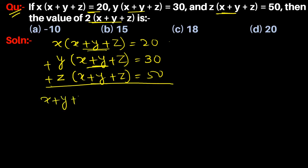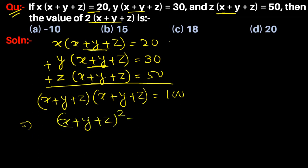get x in the first part, y in the second, and z in the third, which equals 100. So (x + y + z) whole square